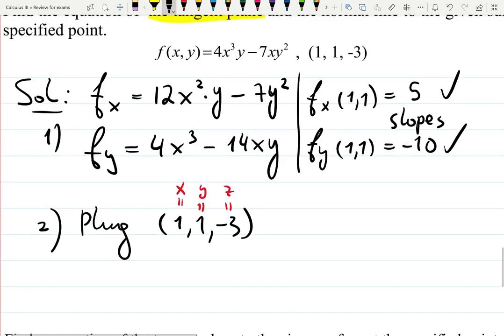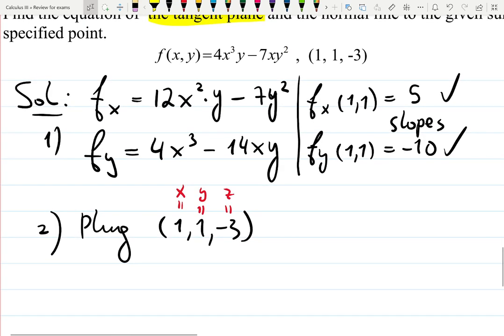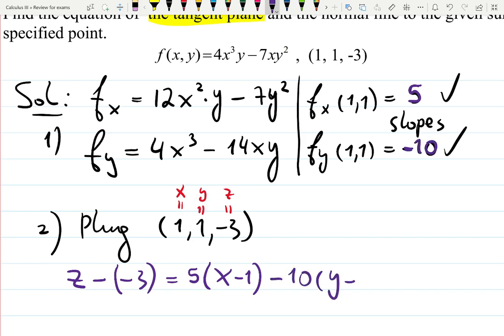Now we can build the equation of a tangent plane using the formula you just saw. It's going to be z minus z sub 0, so plus 3, because minus minus 3, working right down if you want, minus minus 3, equals the slope, first slope, 5, x minus 1, the second slope, minus 10, y minus 1. And this is the answer.